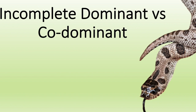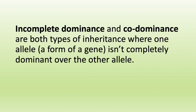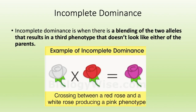First we're going to start off going over the similarities between these terms, then I'm going to break each one down and give you examples, and at the end of this video I'm going to show y'all some special looking hognose snakes. Incomplete dominance and co-dominance are both types of inheritance where one allele or form of a gene isn't completely dominant over the other allele.